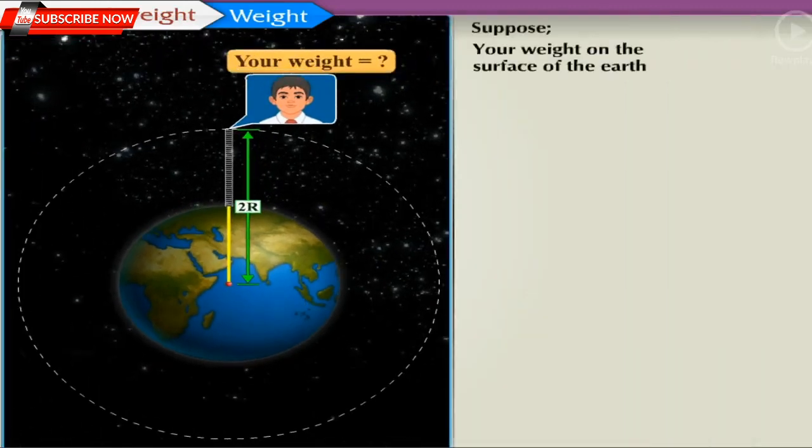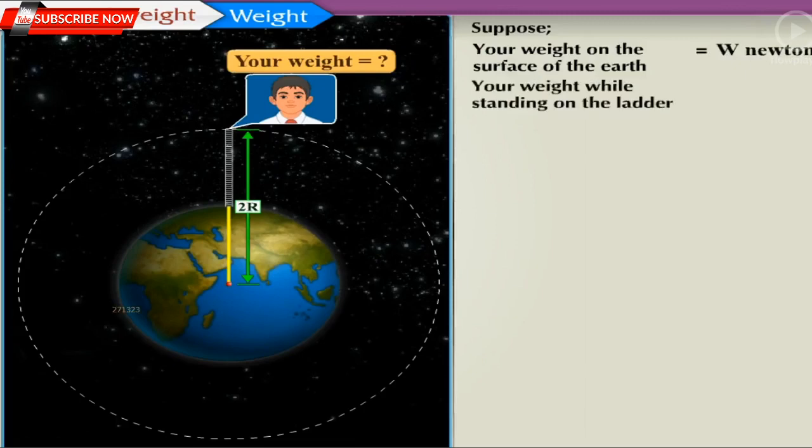Suppose your weight on the surface of the Earth is W newton and your weight while standing on the ladder is W1 newton. Here, W is equal to small m into small g.